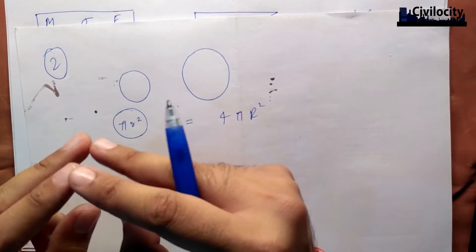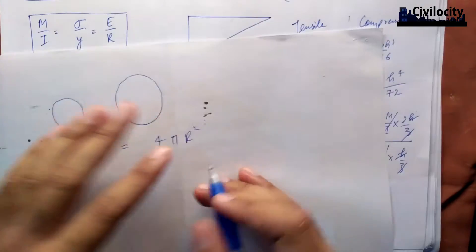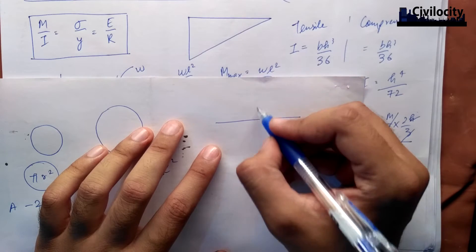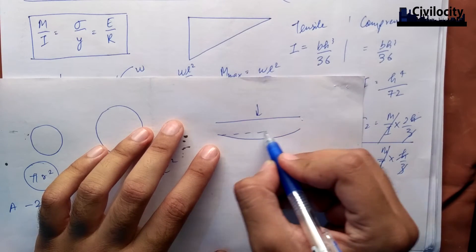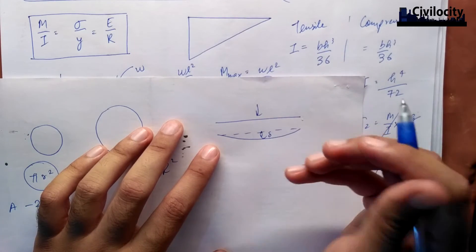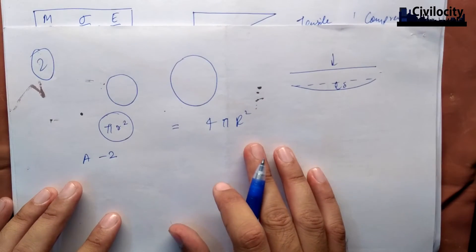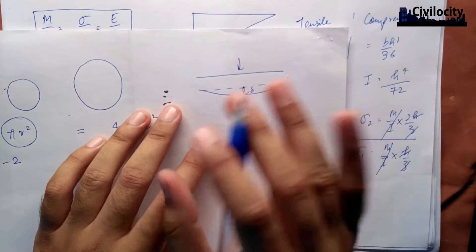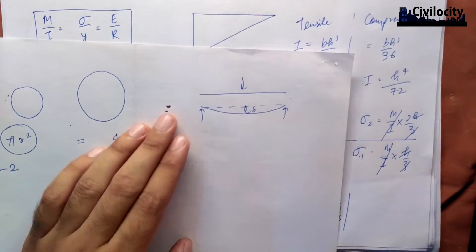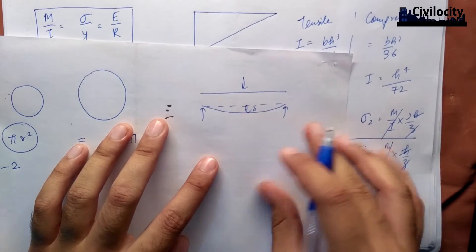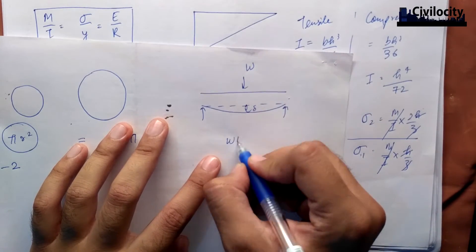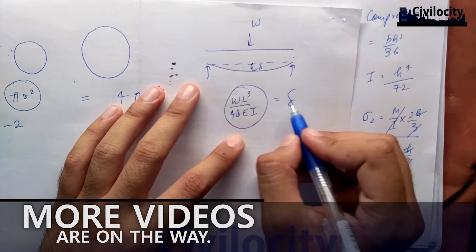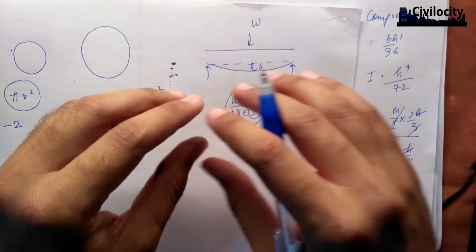Next, let's talk about deflection. Deflection means that the beam will bend or settle under load — when a load is applied, the beam deflects. For a simply supported beam with a central point load W, the deflection formula is: delta = W L cubed divided by 48 E I. So deflection is inversely proportional to the moment of inertia I.